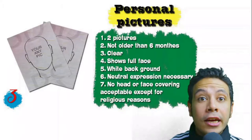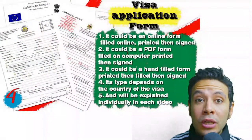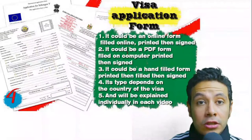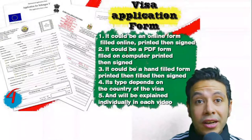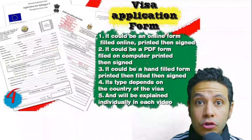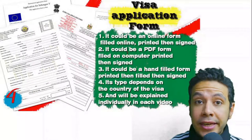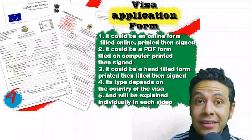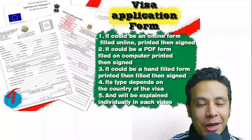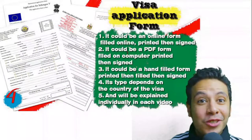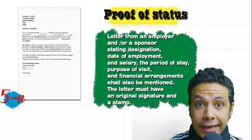Speaking about the visa application form: in general, you need only one copy, but sometimes two or three copies are required. Visa forms differ from country to country. Generally you print and fill it manually, but many countries now provide the form on an online platform where you can fill it online and then print and sign it. For the application form, you just fill it as demonstrated in this video.